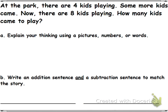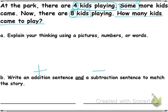Now we're going to do one more — this is on your paper. I'm going to read it to you and you're going to solve this one on your own. At the park, there are four kids playing. Some more kids came. Now there are eight kids playing. How many kids came to play? Draw your picture and do your addition and subtraction number sentences, then check with someone sitting right next to you to see if you got the same answer. You can pause the video and then press play to check your work.